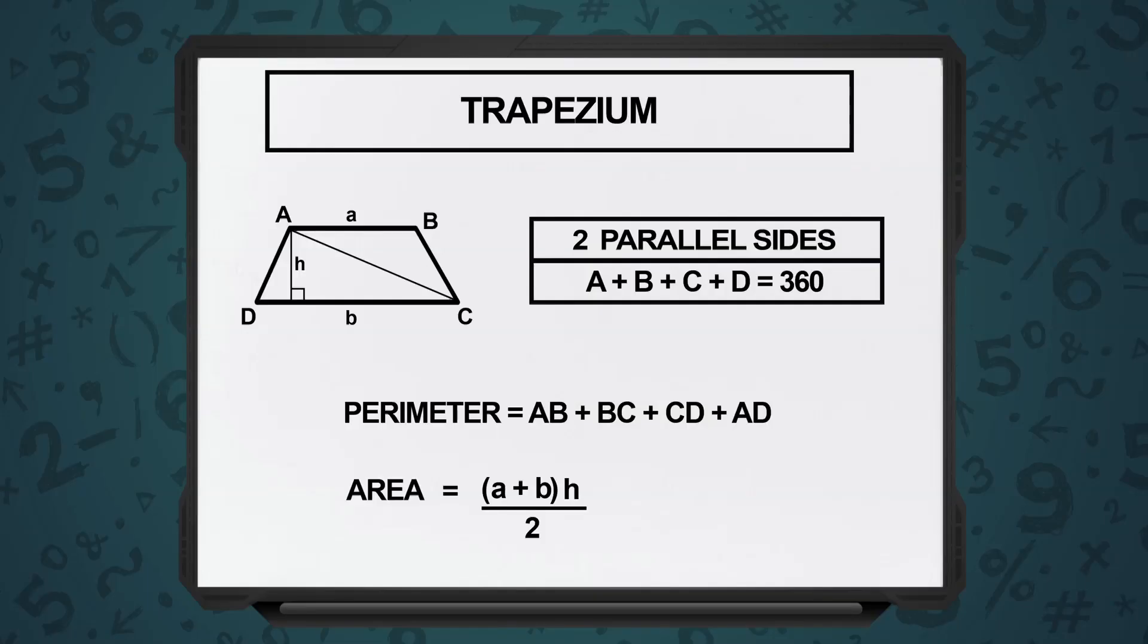Then there is one specific kind of subcategory in this which is known as an isosceles trapezium. In an isosceles trapezium, the two sides that are not parallel to each other—A and B are the two sides that are parallel to each other—the two sides C and D that are not parallel to each other, their lengths are equal.